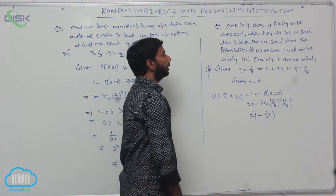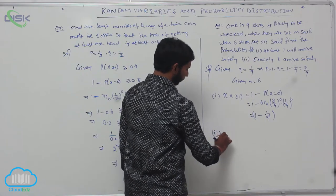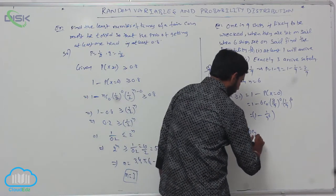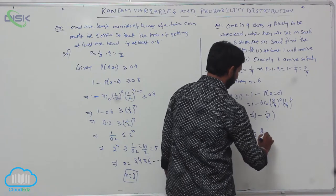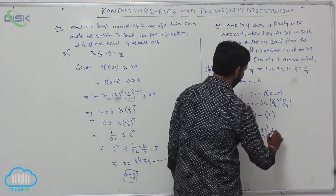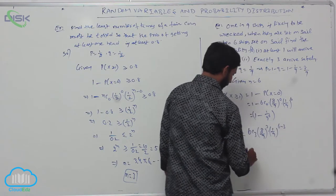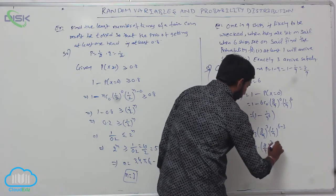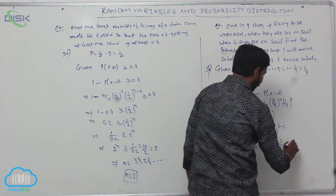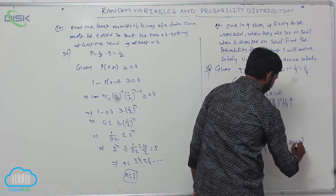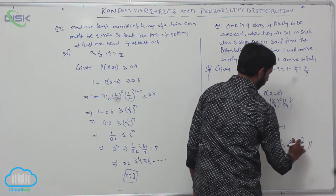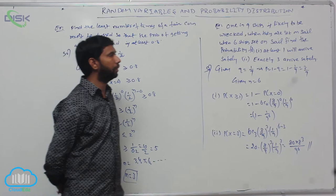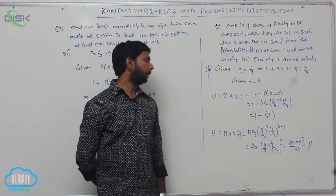That is the probability for at least 1 arriving safely. The next part is exactly 3: P of X equal to 3 equals 6C3 into (8/9)^3 into (1/9)^3, which equals 6C3 into 20 into (8/9)^3 into (1/9)^3. This simplifies to 20 into 8 cubed by 9 to the power 6. That is the probability for exactly 3.